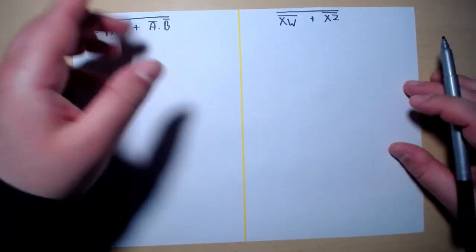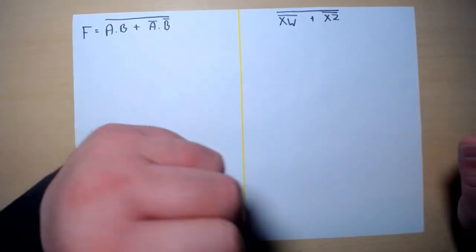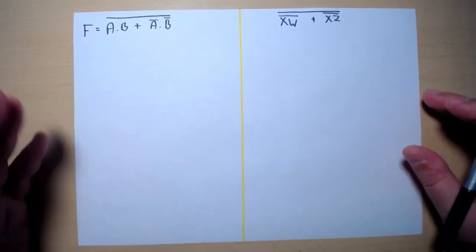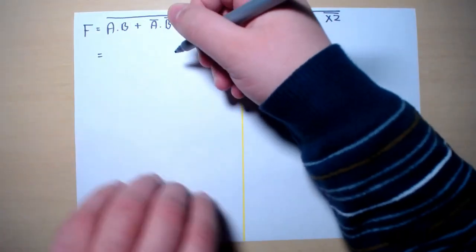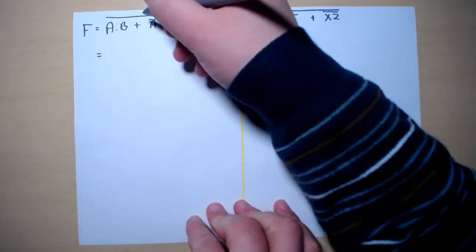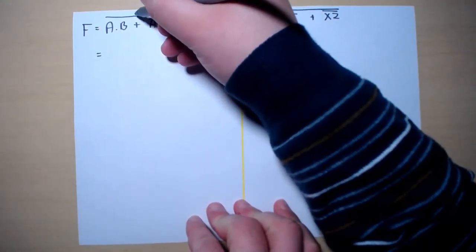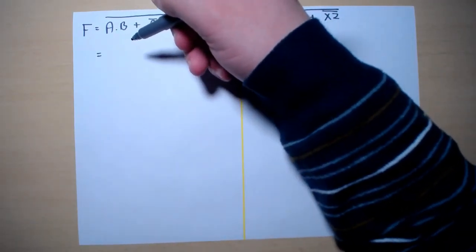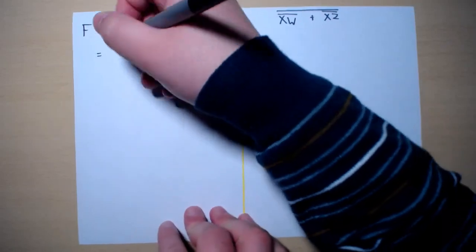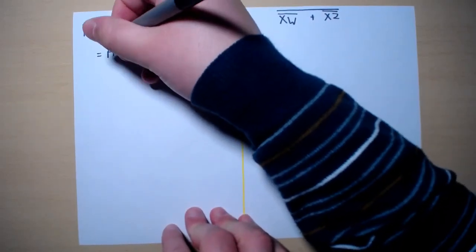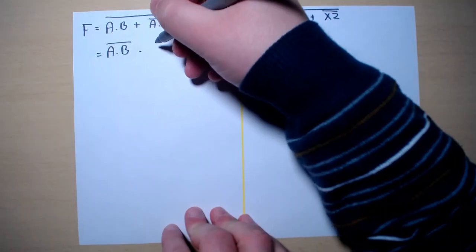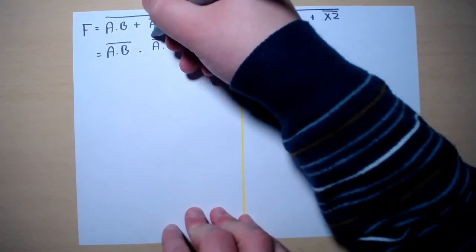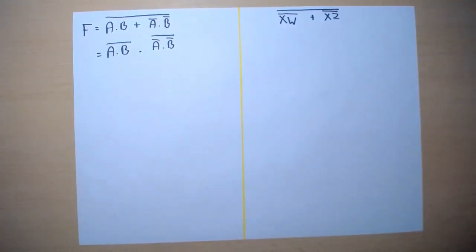So I'm going to start by applying De Morgan's law. I am going to divide this NOT gate into two parts and swap the sign accordingly, so we'll get A and B naught AND A naught and B naught naught.